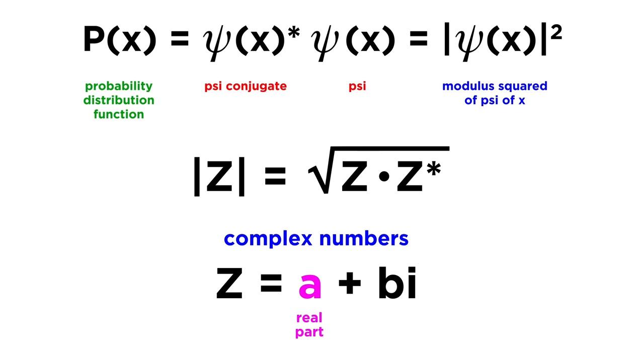And finally four, operators generally do not commute. This means that AB is not necessarily equal to BA. Therefore, the order of operators must be followed strictly.